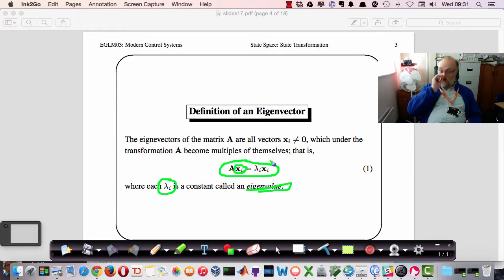And of course we're looking for non-trivial solutions. So we don't allow the solution where xi is zero because that would be a trivial one. So that's the definition of eigenvalues.